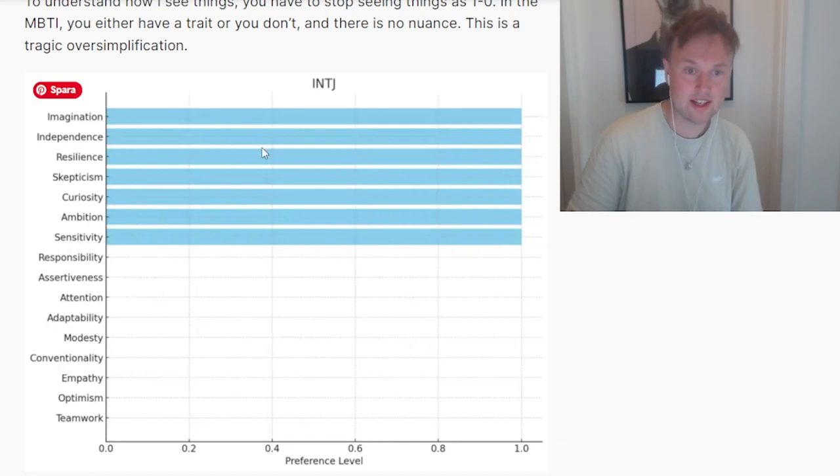Imagine that we look at this INTJ. Typically in the MBTI community, it's common to think of things as dichotomies. You either have a trait or you don't. You either are an intuitive or you're a sensor. You're either an introvert or an extrovert. There's no in-between. There's no level. There's no grades.